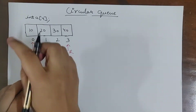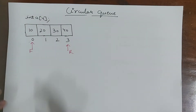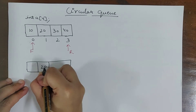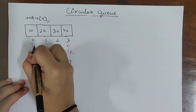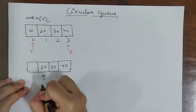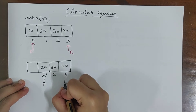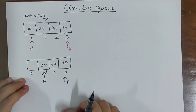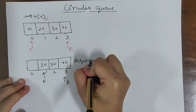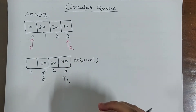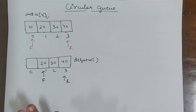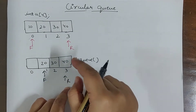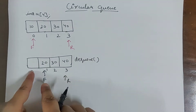Let's delete some data. I'll delete 10 — obviously I have no choice but to delete 10. When I delete a data, front becomes front plus plus. So I deleted 10, leaving 20, 30, and 40. Front now points to front plus 1. So front is 1 and rear is 3. Now if I consider this as a classical queue, I still won't be able to insert new data.